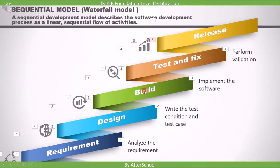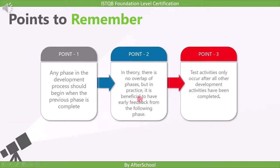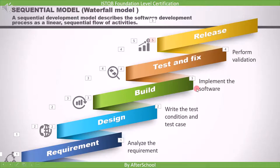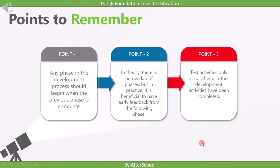In practice, it is beneficial to have early feedback from the following phases, so some overlap between phases is better for the product. The final key point is that test activities only occur after all other development activities have been completed — this is the big drawback of the waterfall model. There is no early feedback process, which is why we usually choose the V-model or agile development model instead.